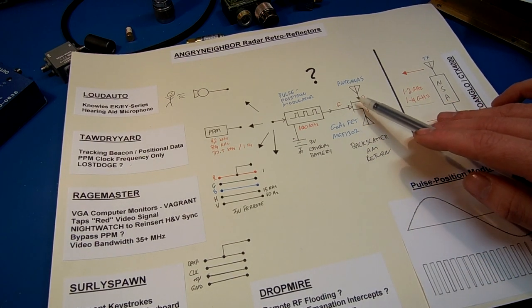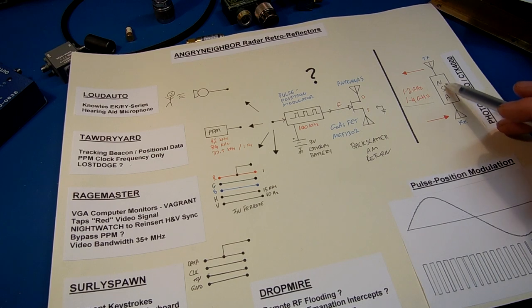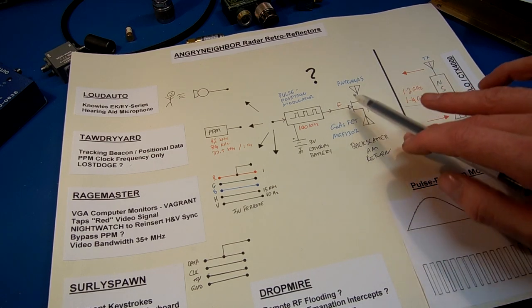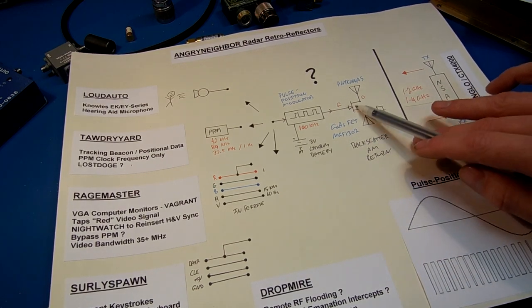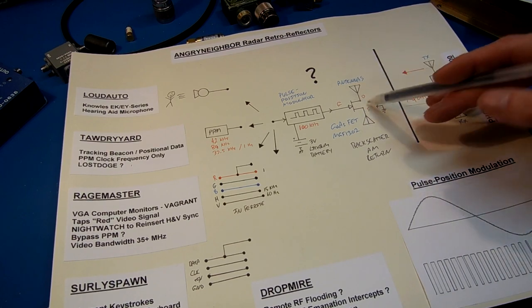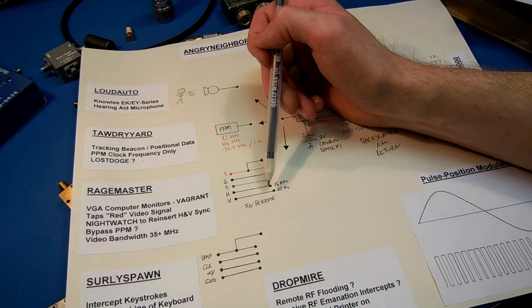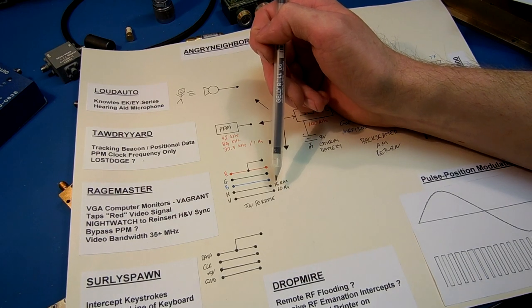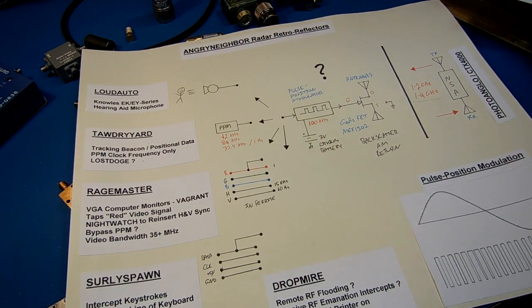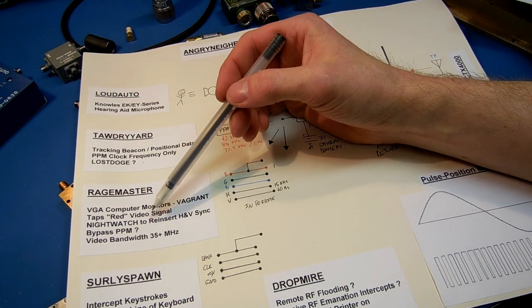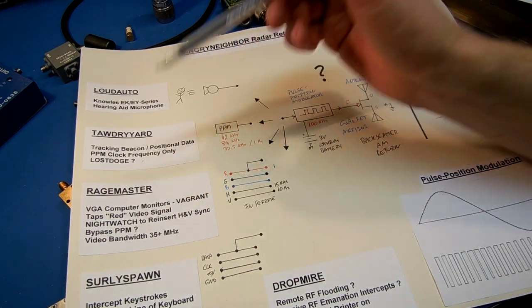And so the illumination will get chopped up internally in the FET and be reflected back out. The horizontal and vertical sync signals need to be added externally with a device called the Night Watch unit to reinsert the horizontal and vertical sync.